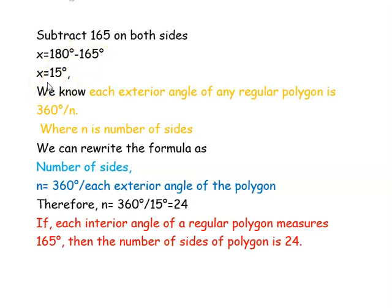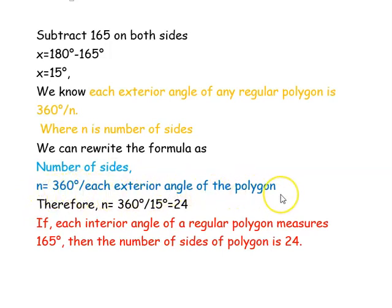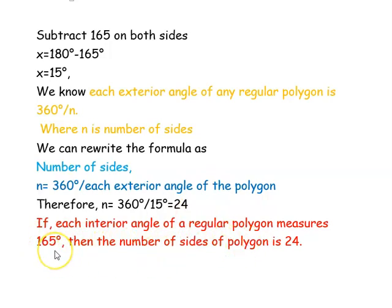So x is the exterior angle. We know that each exterior angle of any regular polygon has the formula 360 degrees divided by n, where n is the number of sides. We rewrite the formula as n equals 360 degrees divided by each exterior angle. We found each exterior angle as 15 degrees for the given interior angle of 165 degrees. So n equals 360 divided by 15, which equals 24. Therefore, the number of sides of the polygon is 24.